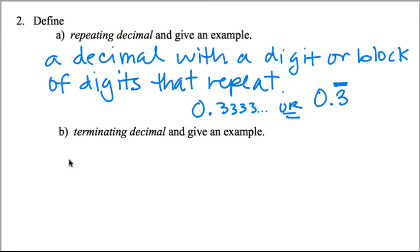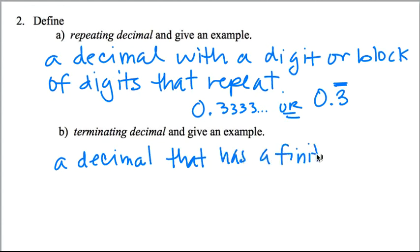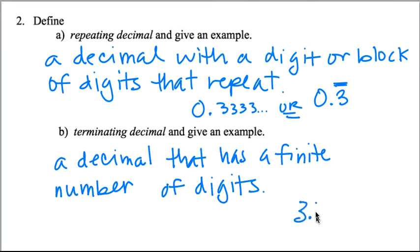Now for terminating decimal. I could spell. A decimal that has a finite number of digits. And that would be something like 3.12. There are no little dots at the end. There is no repeating bar. There's actually an end to that decimal.